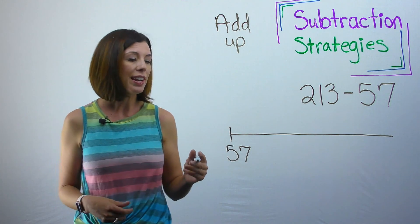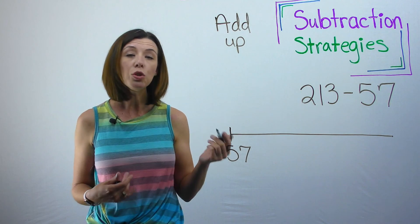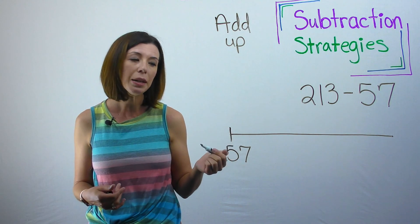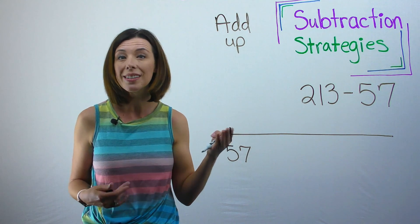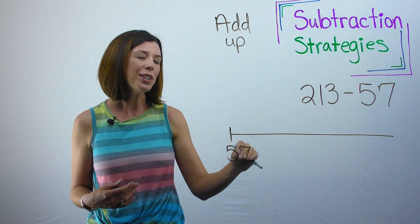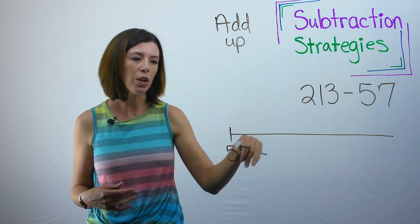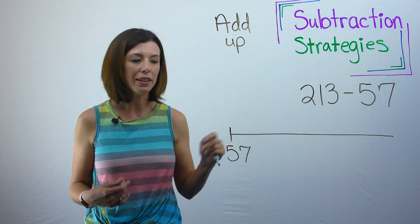So I'm going to start at 57 and here's where I want to hop by friendly numbers. Now, usually when we say friendly numbers, we're talking about either getting to a number where the ending digit is a zero. That would be a friendly number. Or sometimes we're thinking about, I know it's really easy to add 10 or add 100. Those would also be considered friendly numbers as well.